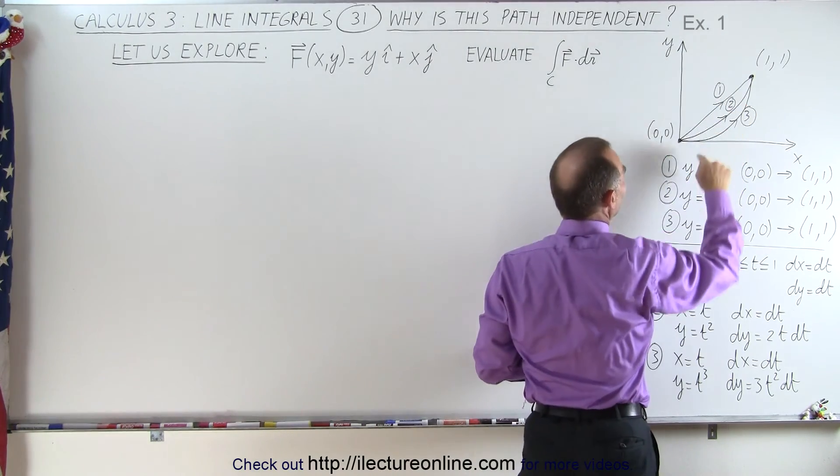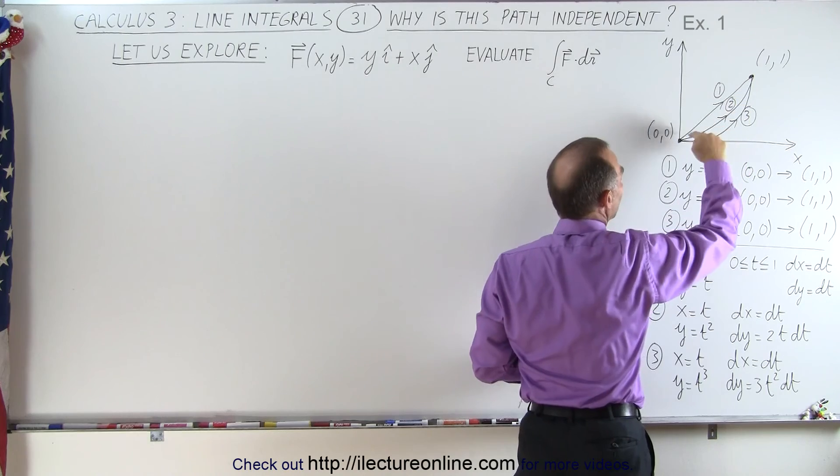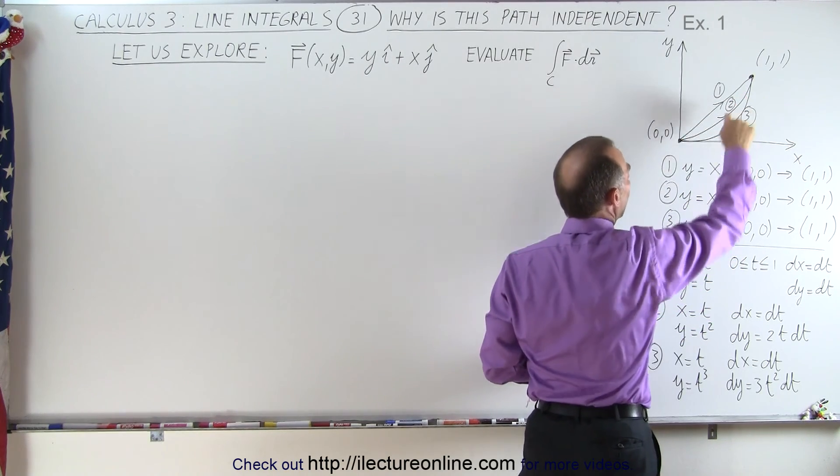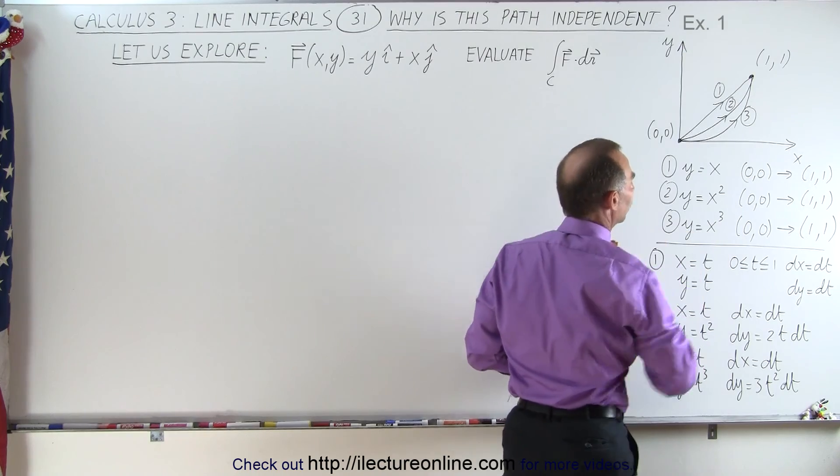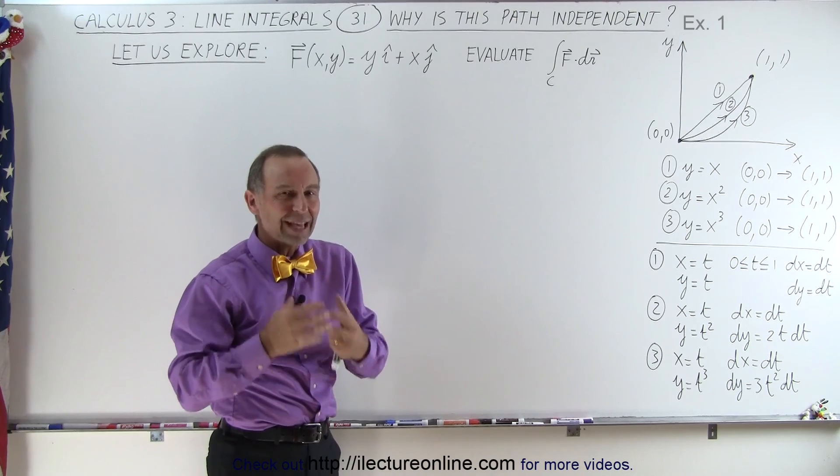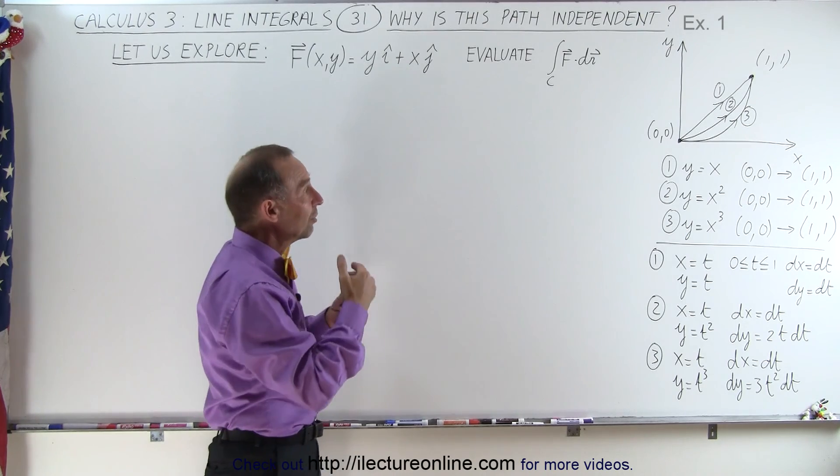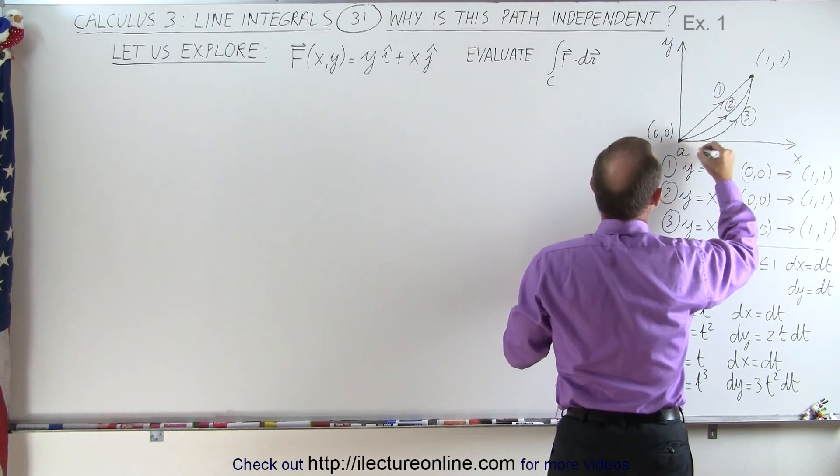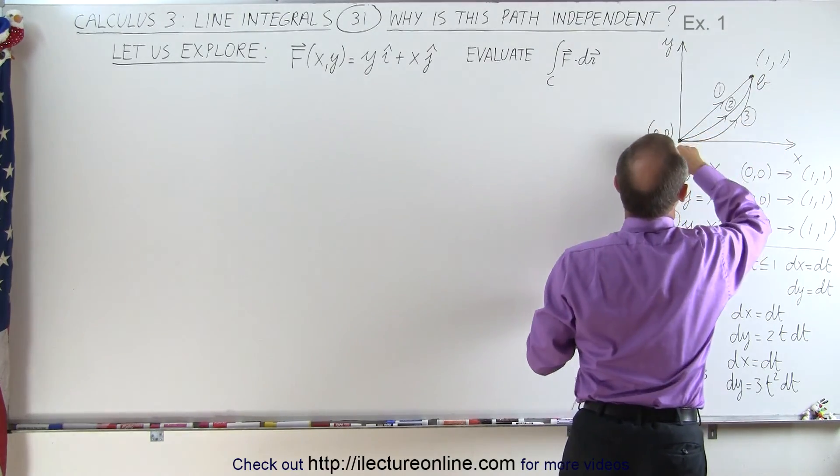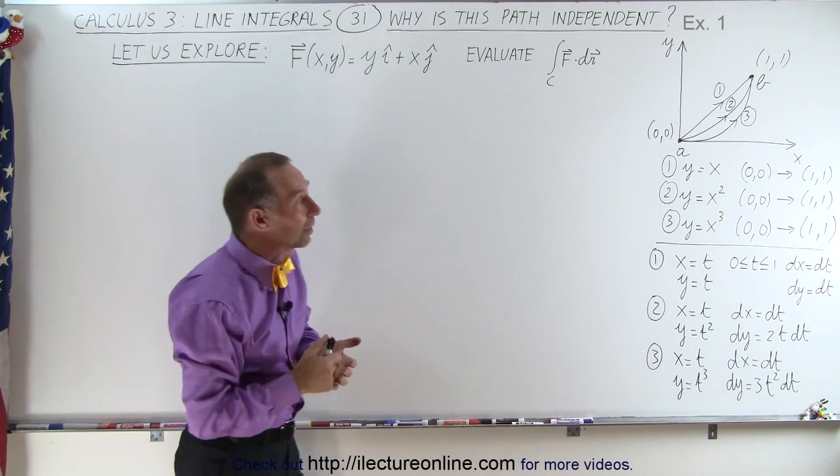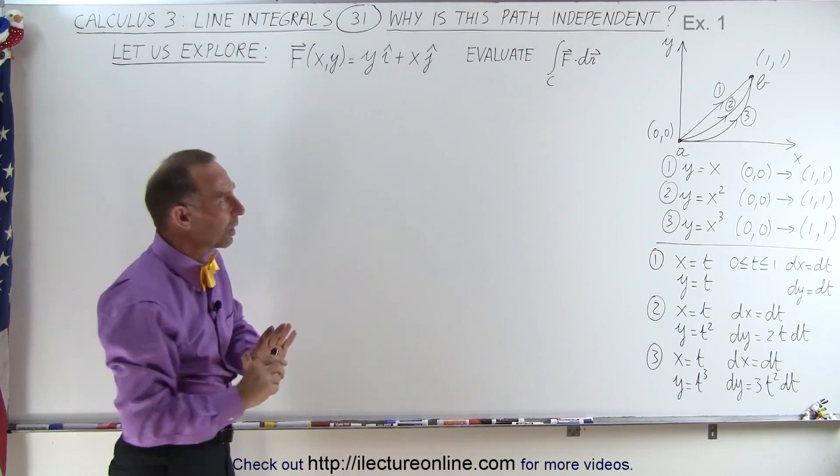The first path is the linear path, y equals x. The second path is the quadratic path, y equals x-squared, and the third path is the cubic path, y equals x-cubed. What we're going to find out is that in each case we end up with the same result, which means it doesn't matter how we get from point A to point B. Let's call this point A, let's call this point B, (0,0) and (1,1). The result of all three line integrals will be the same, and that's what we're going to illustrate here.